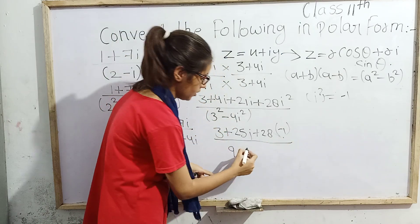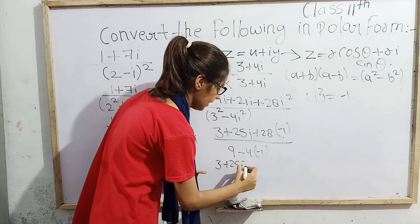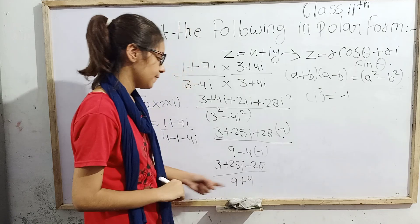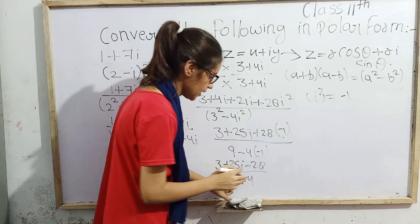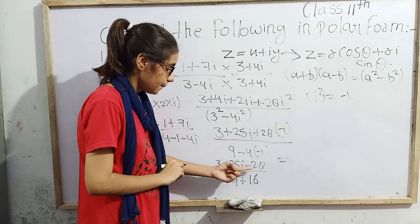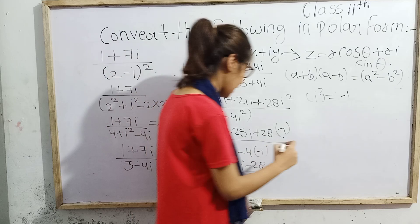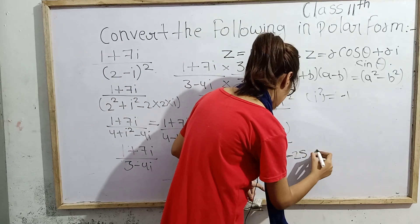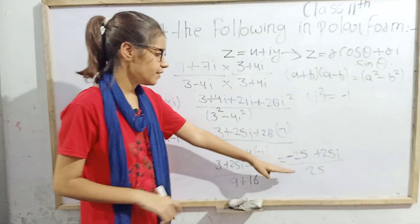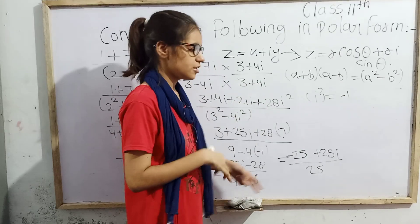Now simplifying the numerator: we have 3 + 4i + 21i + 28i². Since i² = -1, 28i² = -28. Combining real parts: 3 - 28 = -25. Combining imaginary parts: 4i + 21i = 25i. So the numerator is -25 + 25i, and the denominator is 25. We get (-25 + 25i) / 25.